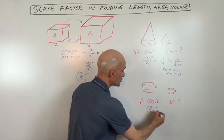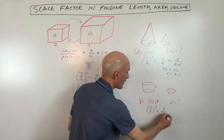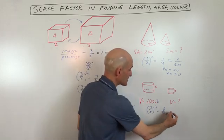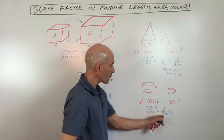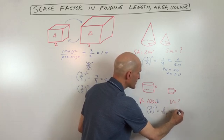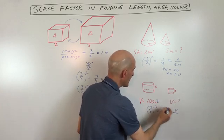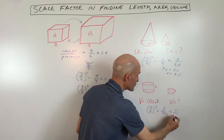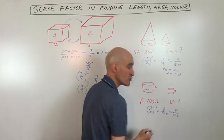They'll tell you that they're similar and then all you have to do is take that scale factor and cube it, which is going to give us 8 over 125. We're going to set up a proportion. 8 over 125 equals the volume of this smaller figure divided by the volume of the larger figure, which they tell us is 100 units cubed.